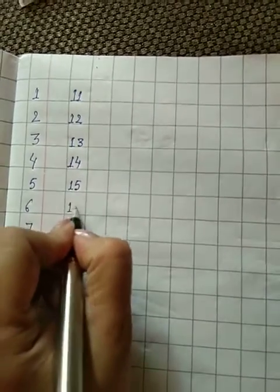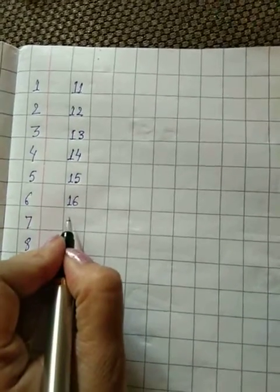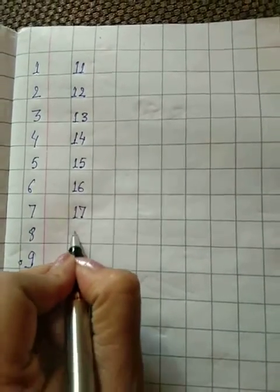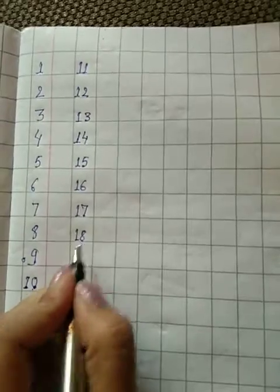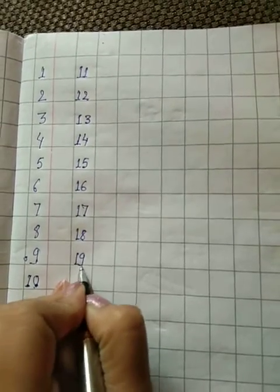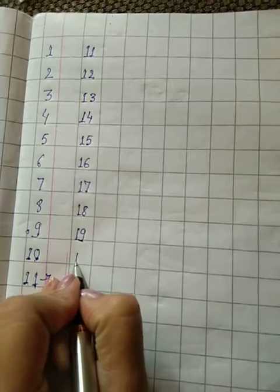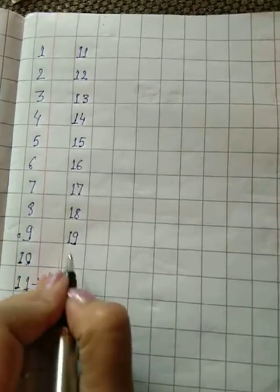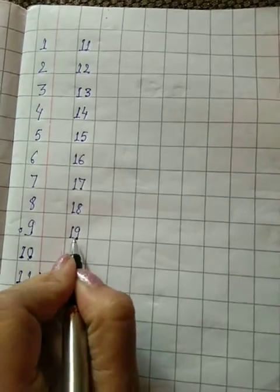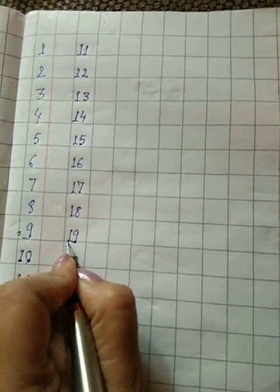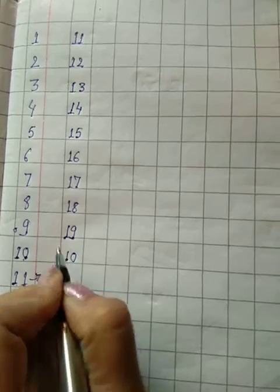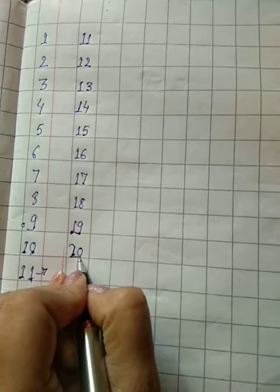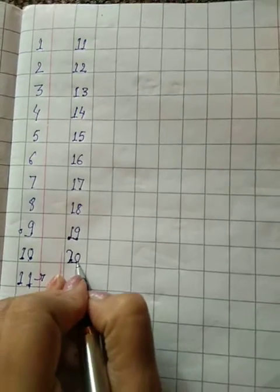1, 6, 16. 1, 7, 17. 1, 8, 18. 1, 9, 19. Then 2, 0, 20.